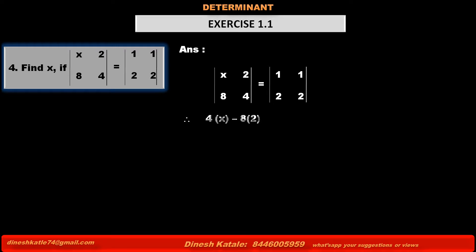The equation becomes 4x minus 8 into 2 — that is, the product of the elements in the principal diagonal minus the product of the elements in the secondary diagonal — is equal to 1 into 2 minus 2 into 1.